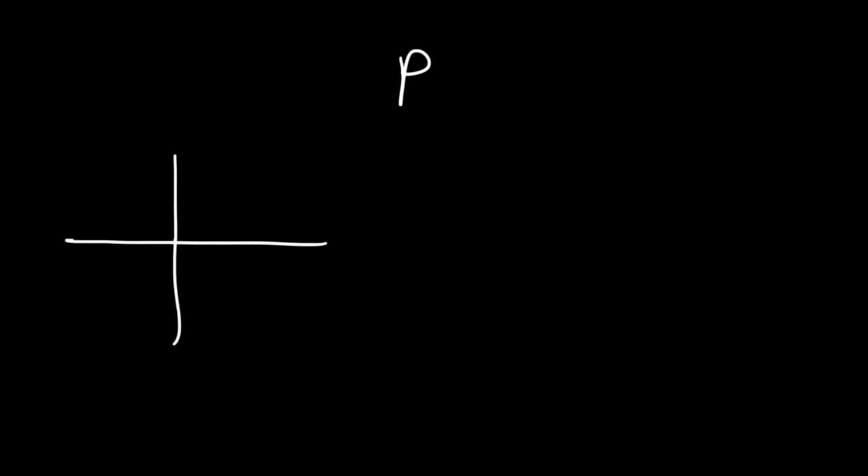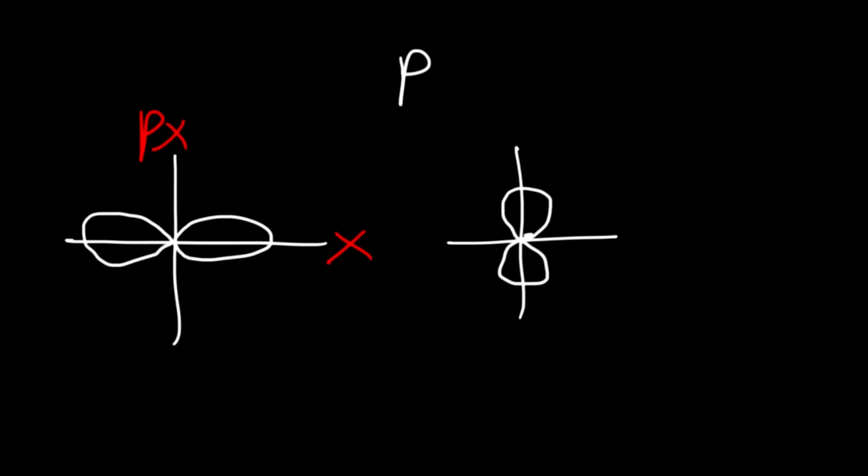Now let's talk about the p orbital. There's one s orbital but there are three different types of p orbitals. You can have a p orbital in the x-axis, known as px. You can have a p orbital oriented along the y-axis, called py. And then there's one oriented about the z-axis, which we call pz.